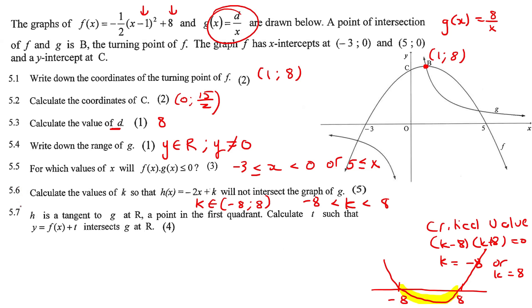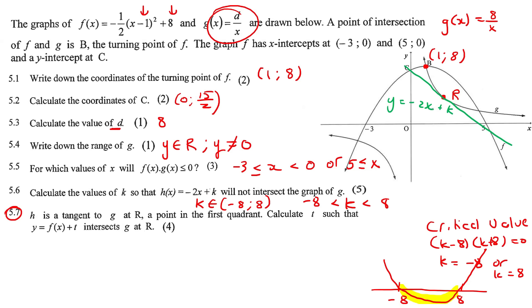This question says h is a tangent to g at point r in the first quadrant. H has equation y = −2x + k, so we already know its gradient. That gradient is important for finding the tangent.